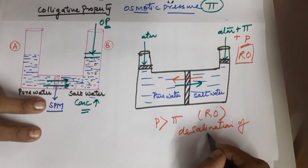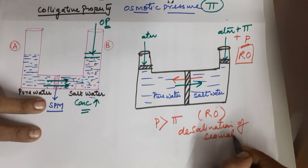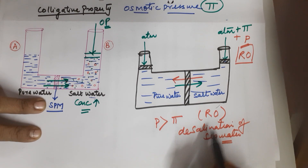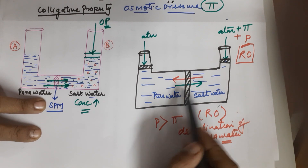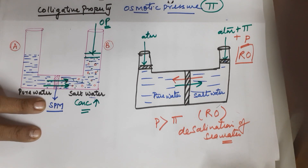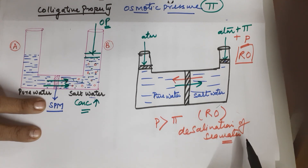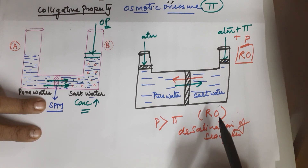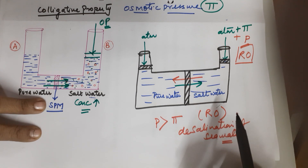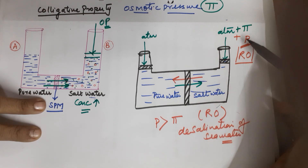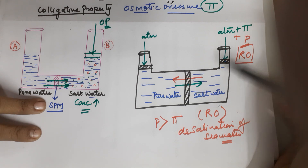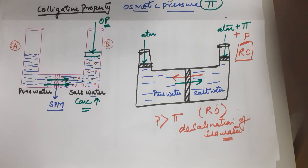This process is used in desalination of seawater — the removal of salt from seawater. You are actually removing water from the seawater, but we name it desalination. Obtaining pure water from seawater is possible only by reverse osmosis, which requires applying extra pressure above the osmotic pressure on the side of the salt solution through the semi-permeable membrane.